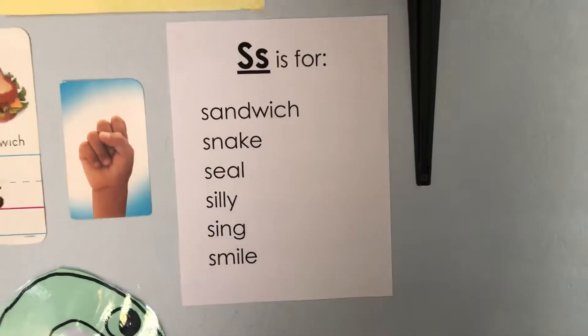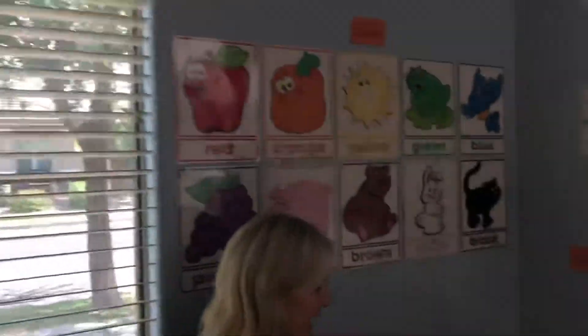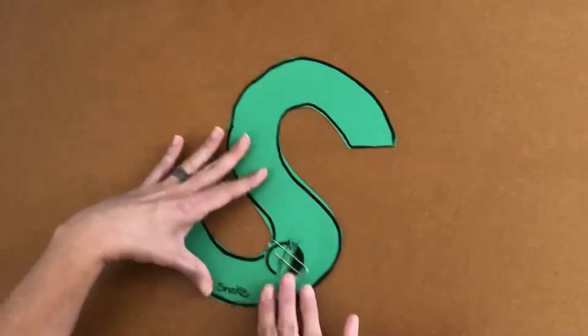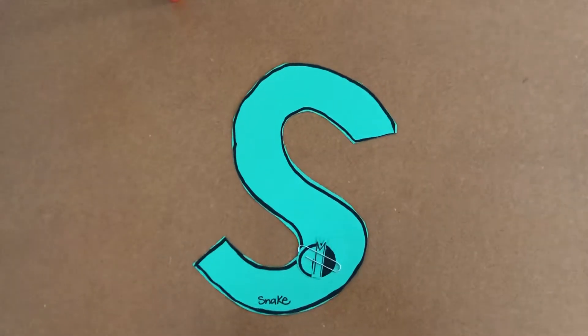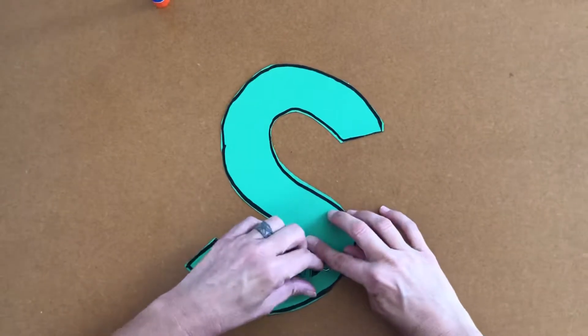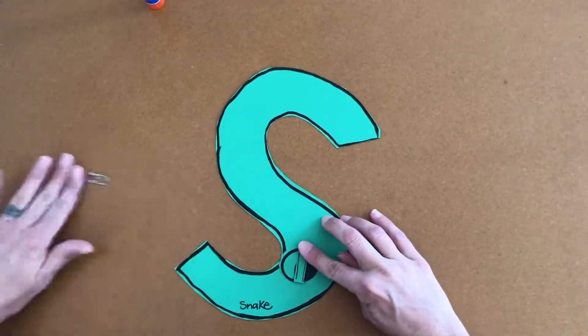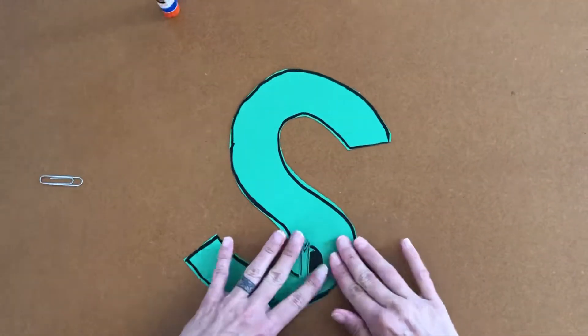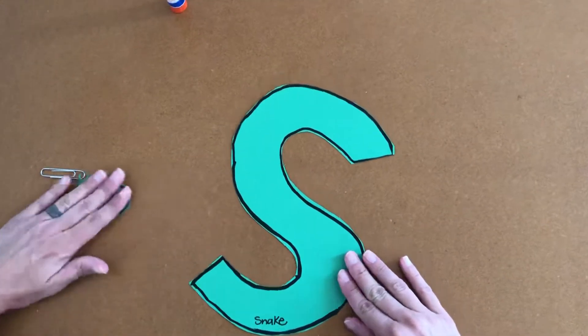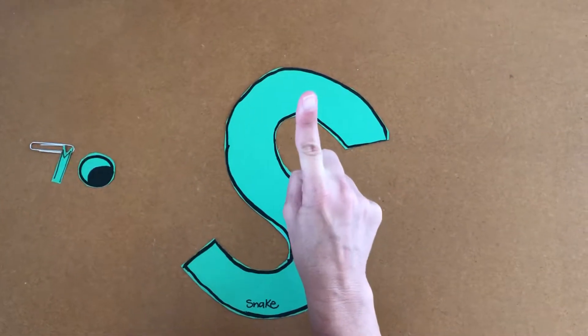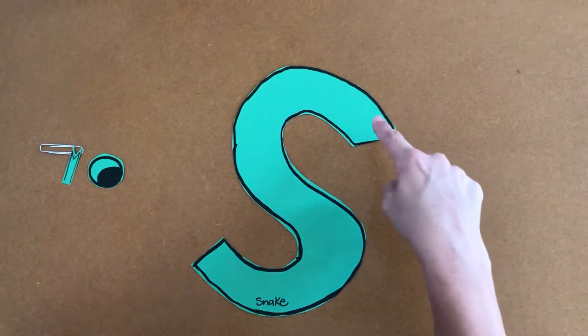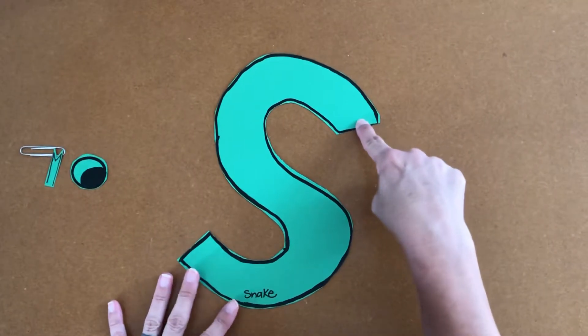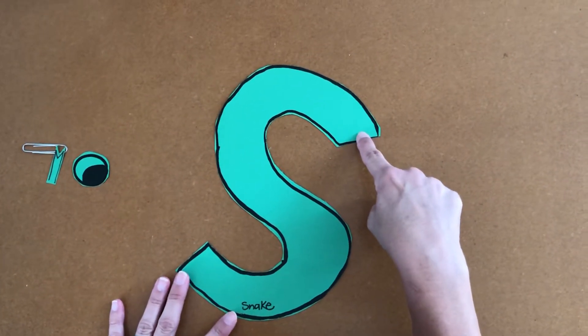Let's head over to the table so we can go over instructions for center one for the letter S. The first thing that we're going to do is dress this S up like a snake. So you slide the paper clip off the pieces over to the side and make a pointy finger.